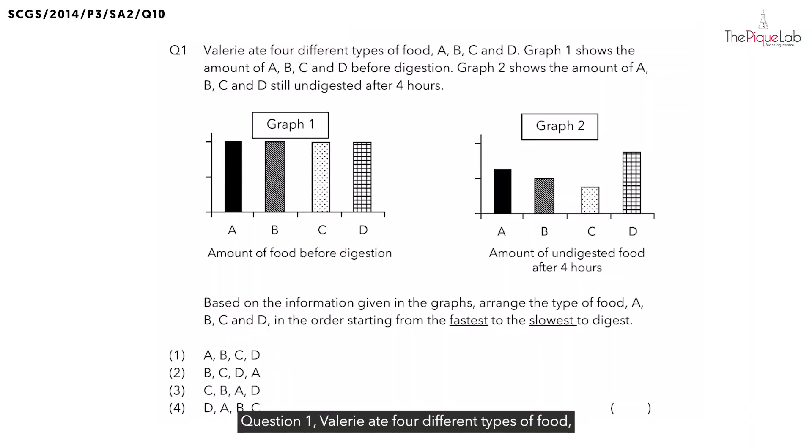Question 1. Valerie ate 4 different types of food: A, B, C, and D. Graph 1 on the left shows us the amount of food before digestion, and Graph 2 shows the amount of the different types of food still undigested after 4 hours. Based on the information given in the graphs, they want us to arrange the type of food A, B, C, and D in order, starting from the fastest to the slowest to digest.